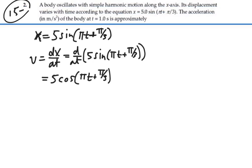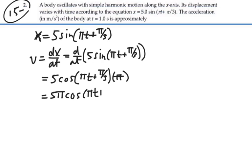But then, since we're taking the derivative of a function, we have to take the derivative of what's inside the function by the chain rule, and that is the derivative of (pi t plus pi over 3). Pi over 3 being a constant, that will leave us with just pi. So this is going to be equal to 5 pi cosine of (pi t plus pi over 3). That is our velocity for all time.